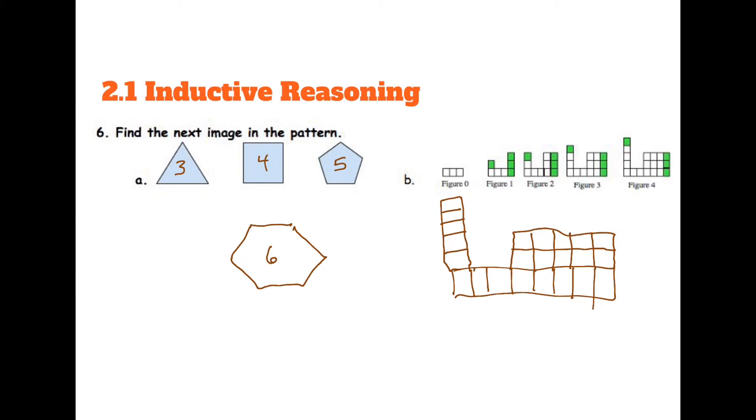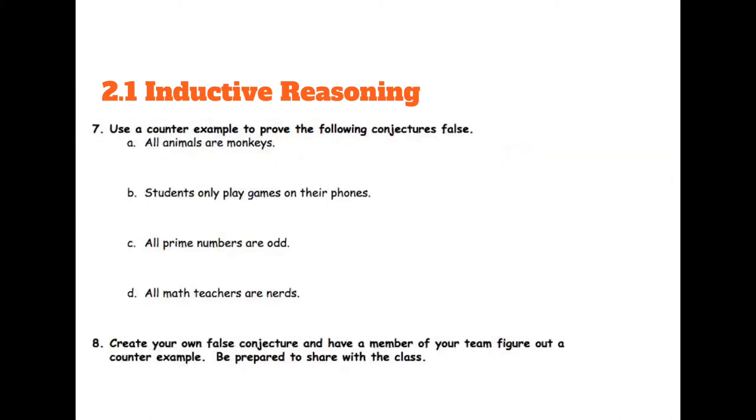And then for B, you can see we're adding the green each time here. So we're going to add an extra column of 3 right here, and we'll add one extra on top here as well. So this should be 6 squares tall, and this should be 8 squares tall here.